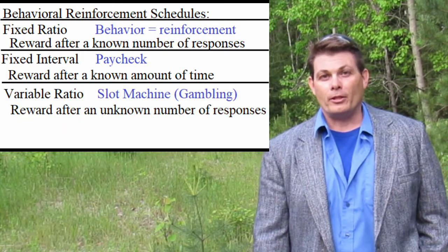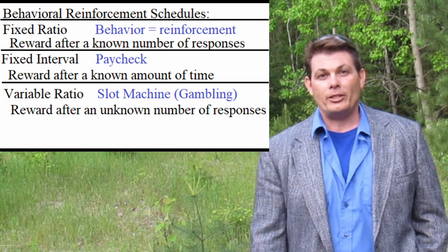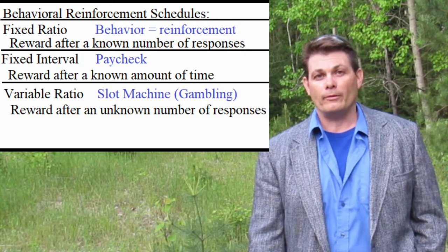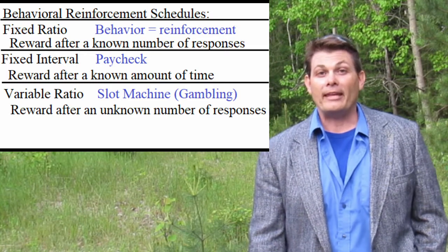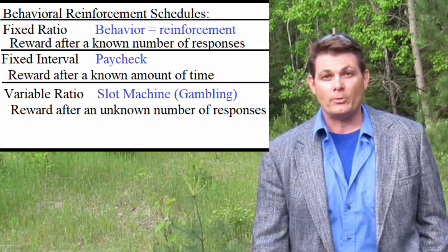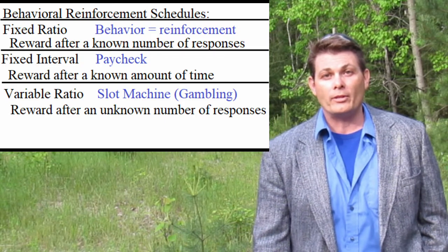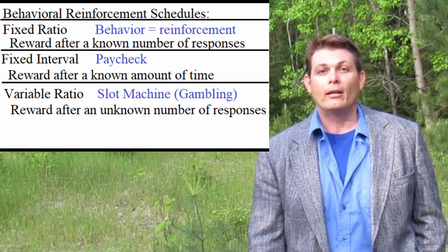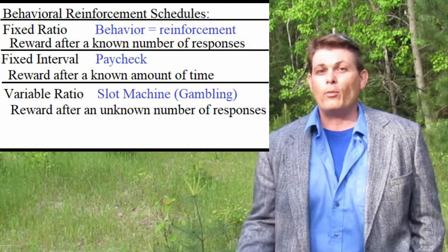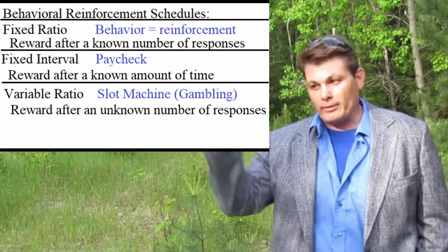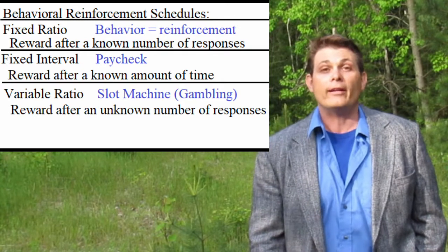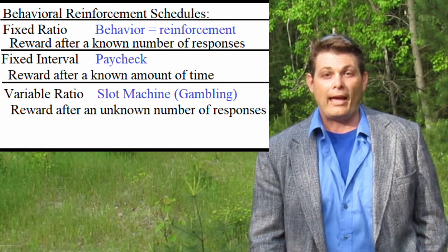The third reinforcement schedule is called variable ratio, which is a response after an unknown number of behavior tries. For example, gambling. Variable ratio is the most addictive of the schedules because you never know when that next reward is coming. When someone pulls down that lever and doesn't know whether the reward is coming or not, they pull it down again. If the reward is good enough, this can be very addictive — and dangerous.